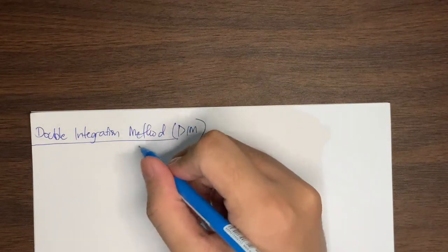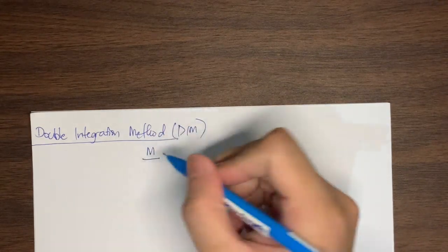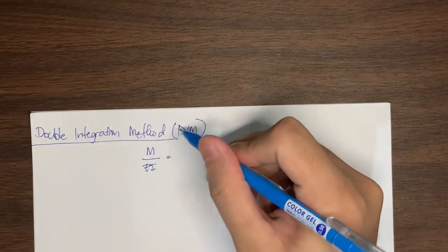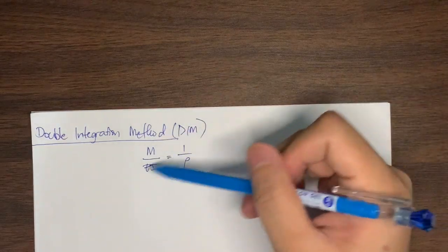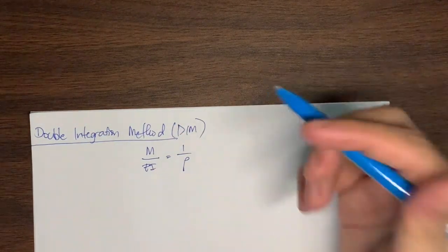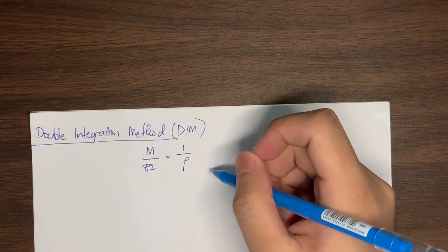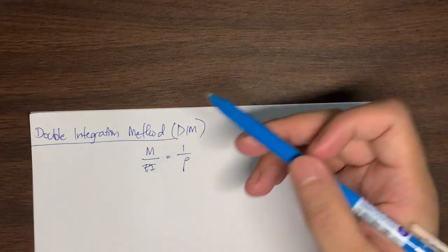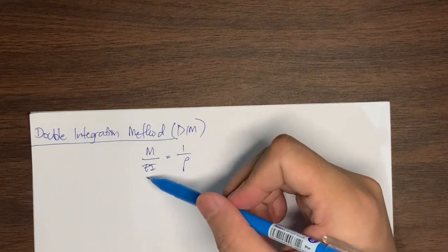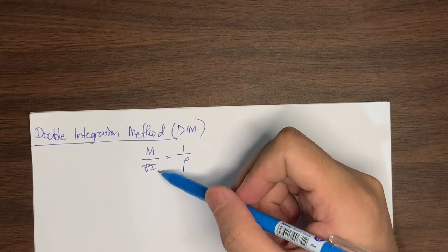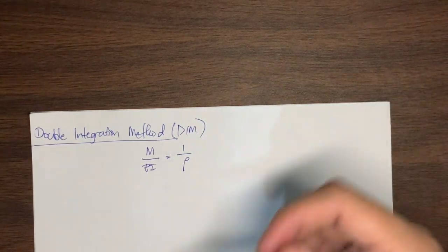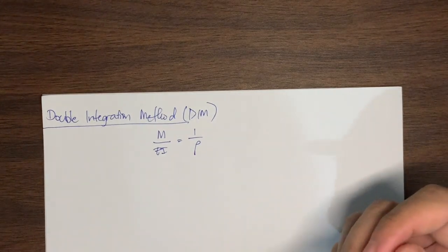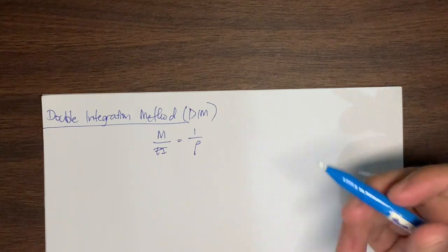Based on the elastic beam theory, we have M over EI equals 1 over ρ. Here, M is the moment as a function, ρ is the radius of curvature, and EI is what we call the flexural rigidity — the product of the modulus of elasticity of the material and the moment of inertia. Let's recall from differential calculus the formula for determining the radius of curvature.